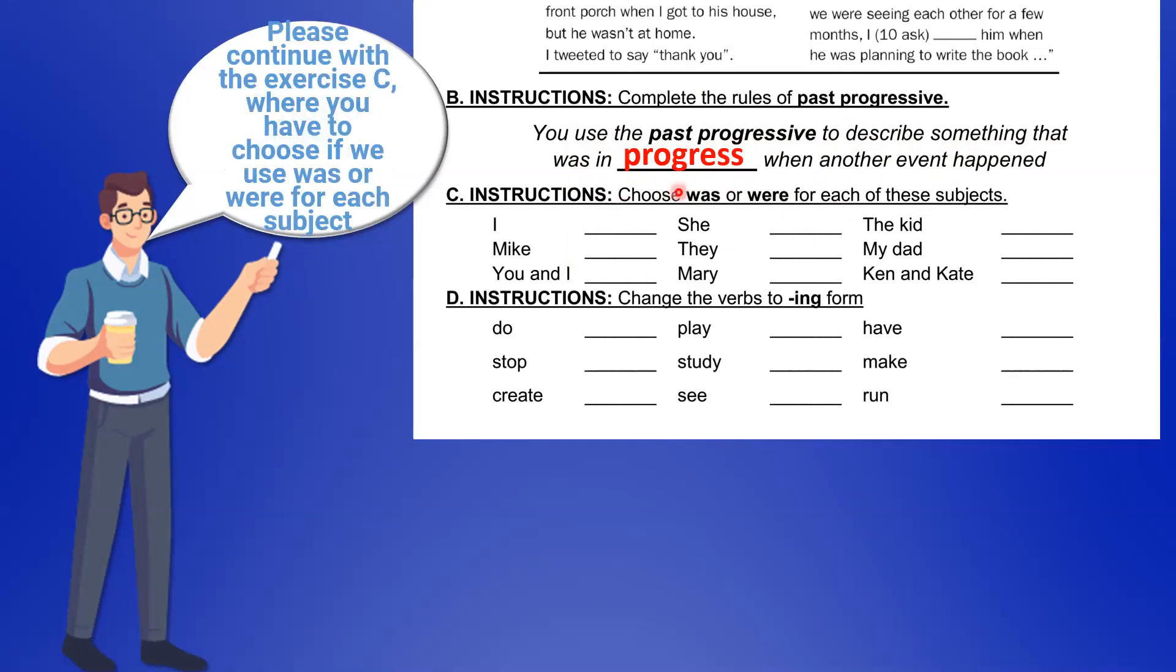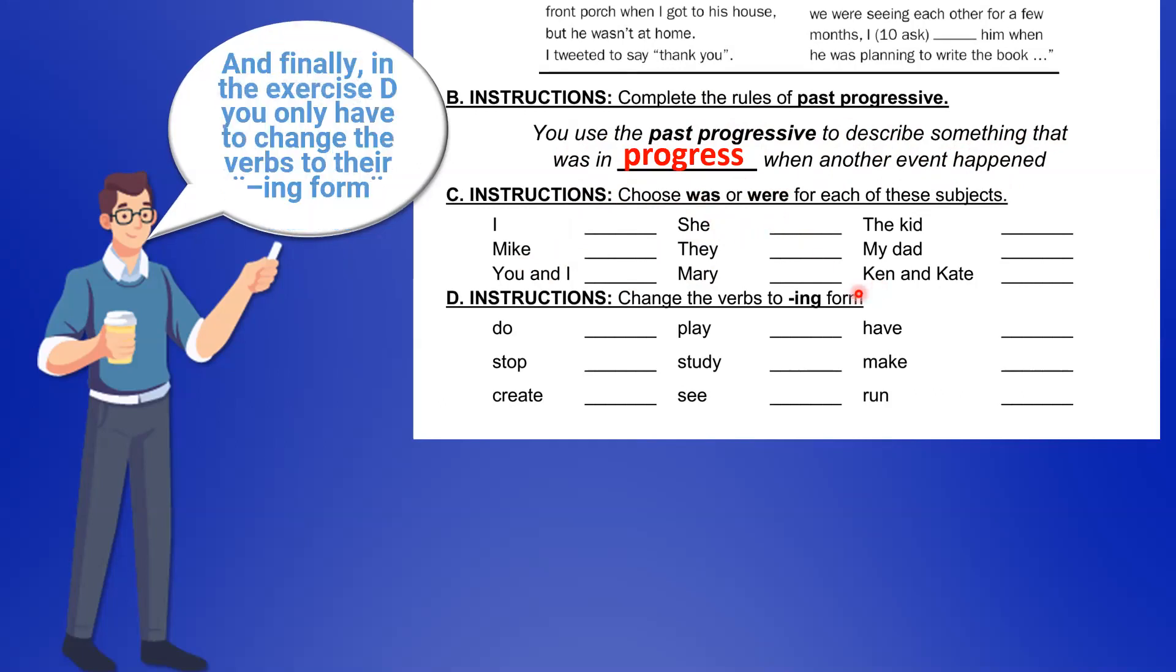Let's continue with exercise C, where you have to choose if we use was or were for each subject. And finally, in exercise D, you only have to change the verbs to the -ing form.